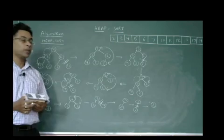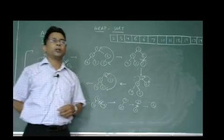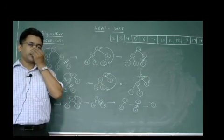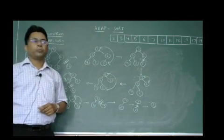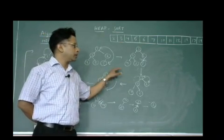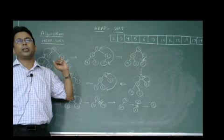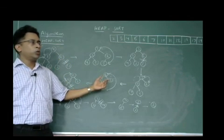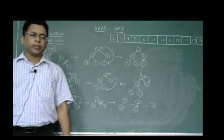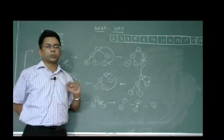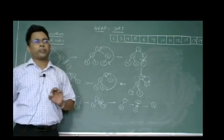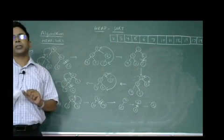Now the complexity of heap sort: the heap is of size log n, and at each step you run heapify for n number of items. For each item you are running the heapify function, so it takes n times log n time to execute. Therefore the complexity of heap sort is O(n log n) in the best case, average case, and worst case. That's all about the heap sort. Thank you.